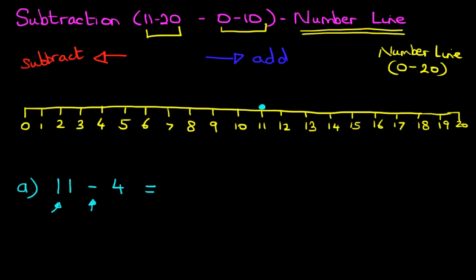Now, how many jumps do we take? Well, look at the question again. It is 11 minus 4. That means we take 4 jumps to the left. So go to the number line, number 11, and let's take 4 jumps. Count with me.